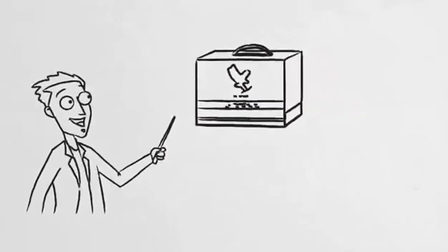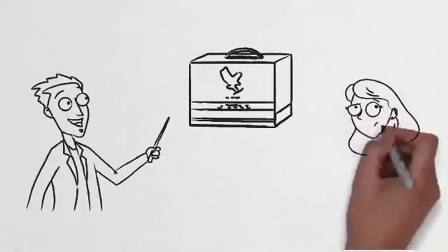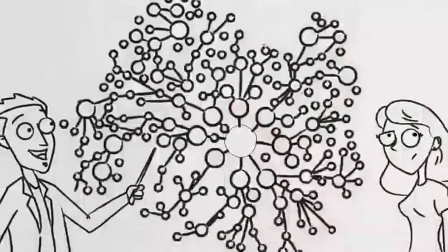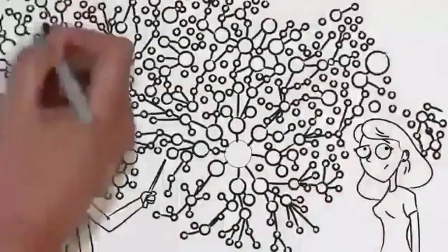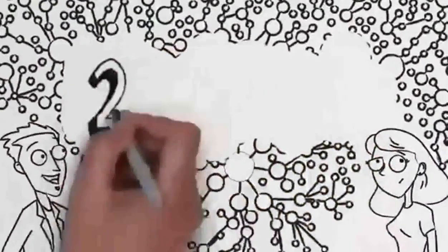So here's what you do: you share our Clean Nine and Fit One packs with two people every month, and they share it with two people, and they share it with two people, and they share with two people. After four months, you will have helped 229,952 people.